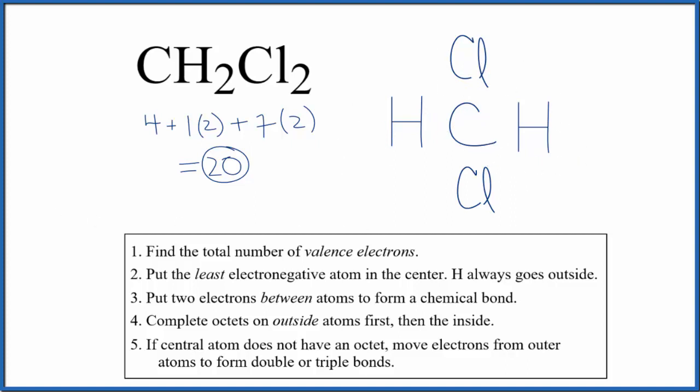Next, we can put two electrons between atoms, a pair of electrons between atoms to form the chemical bonds. It looks like this. So far, we've used eight valence electrons. We have 20 total valence electrons for the CH2Cl2 Lewis structure.